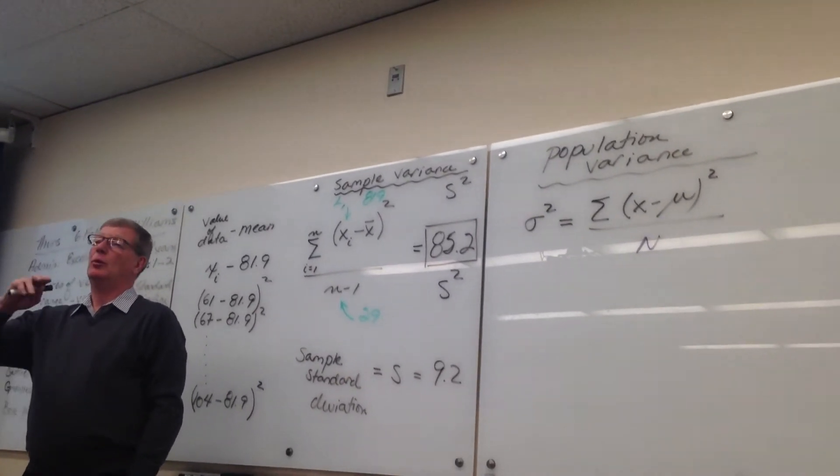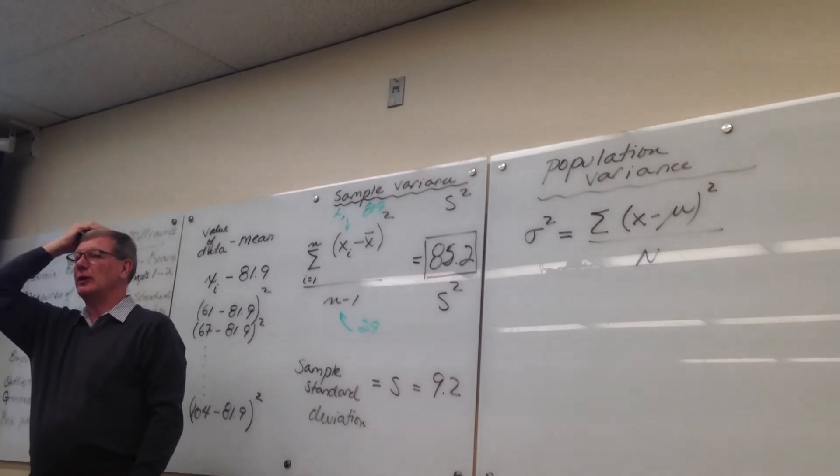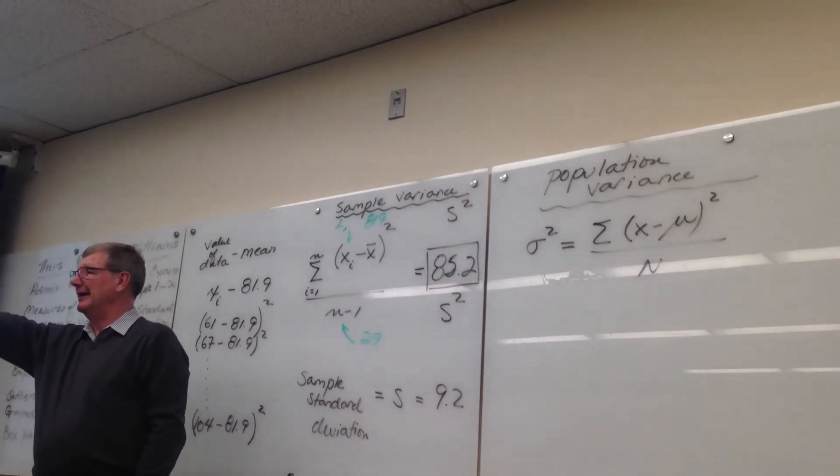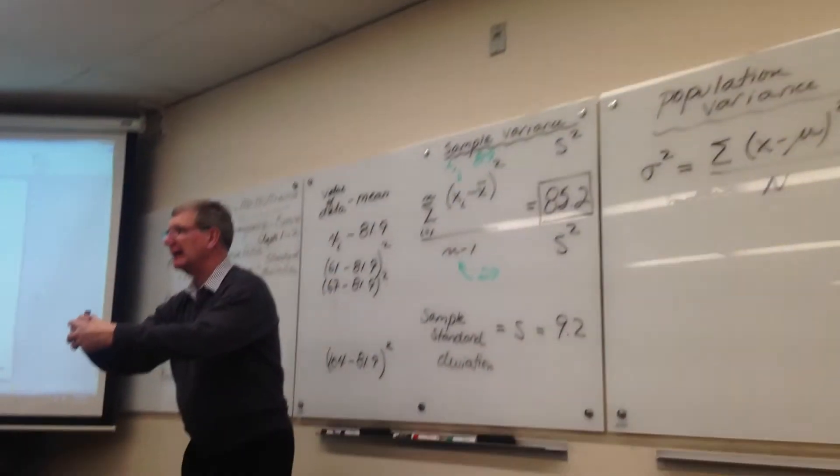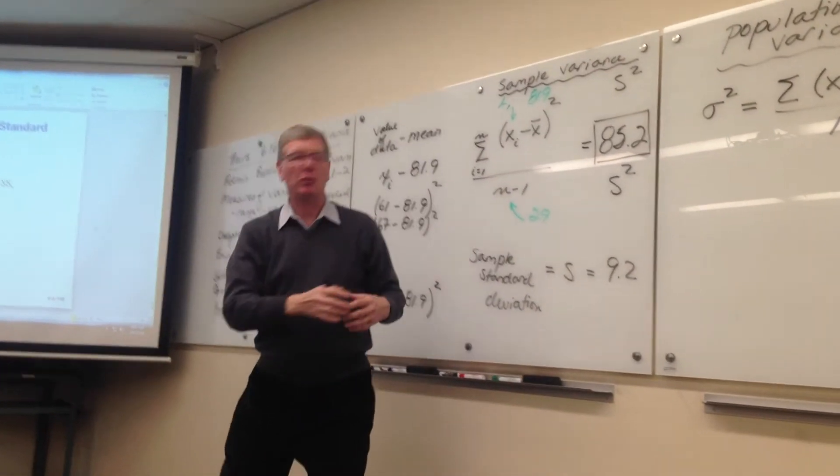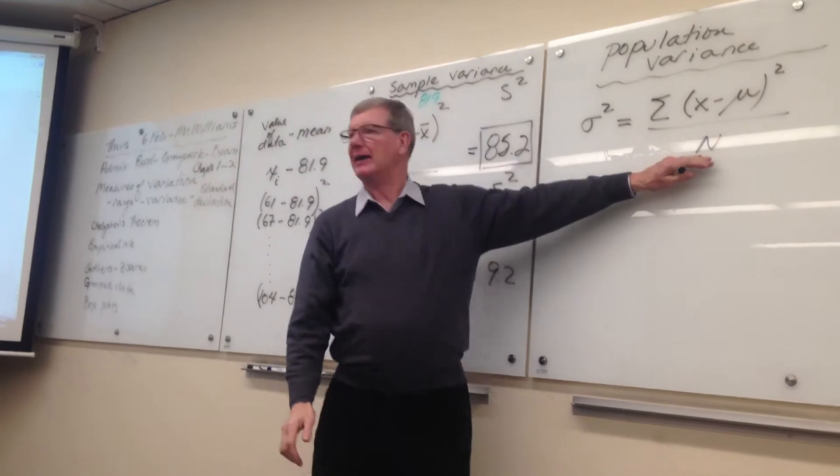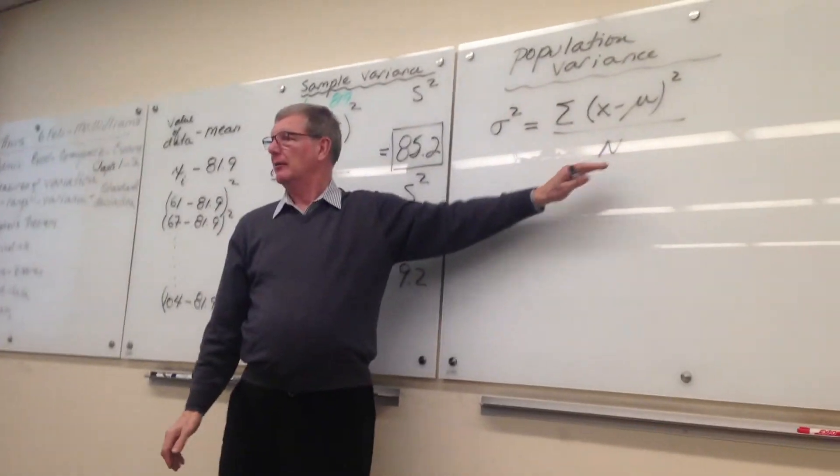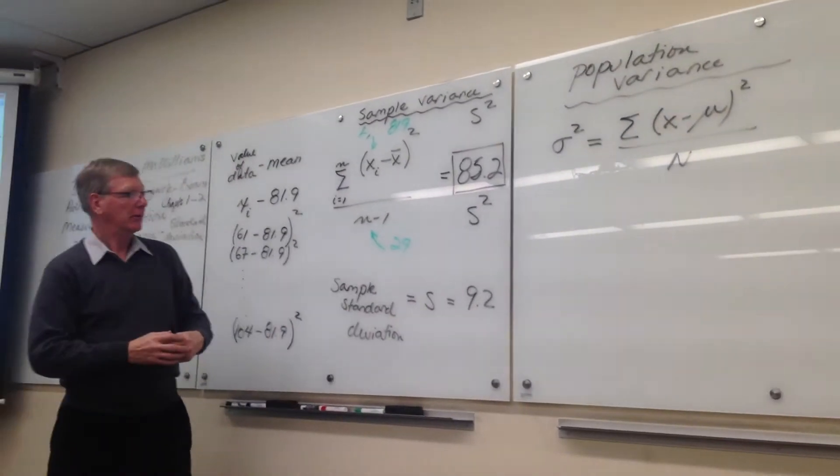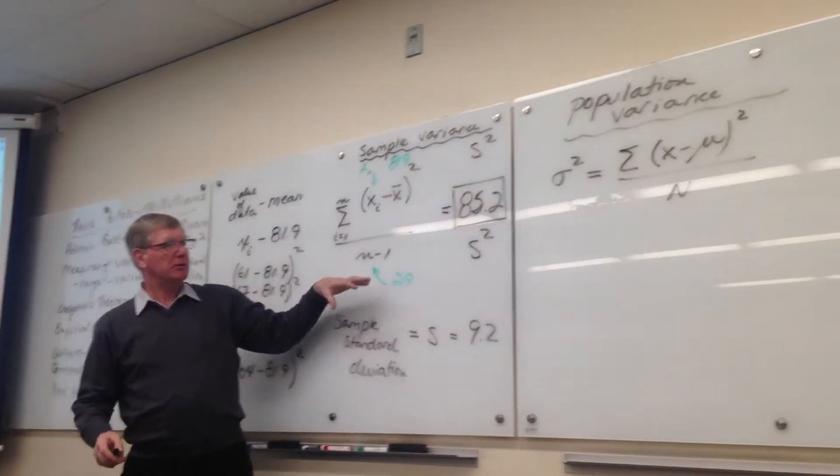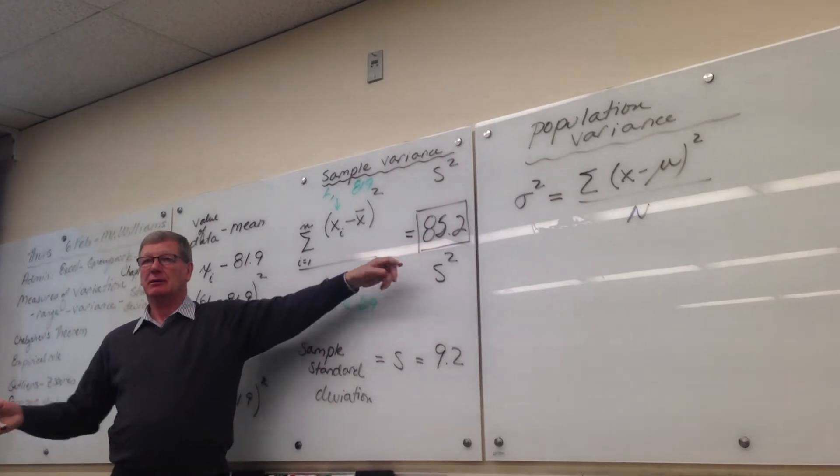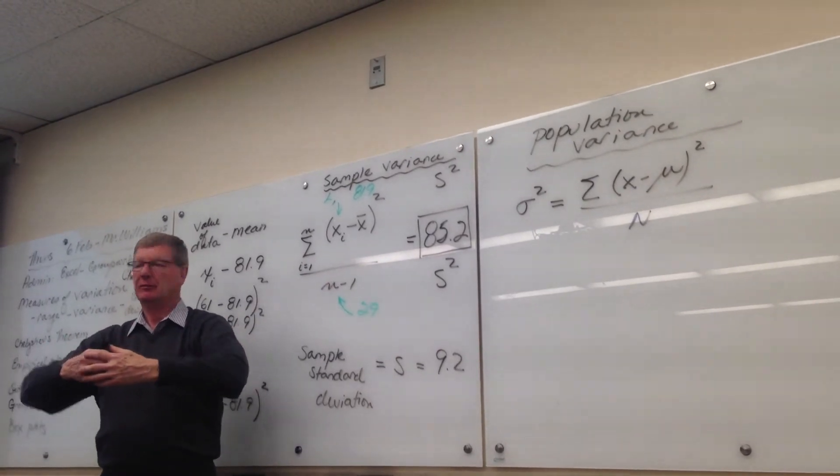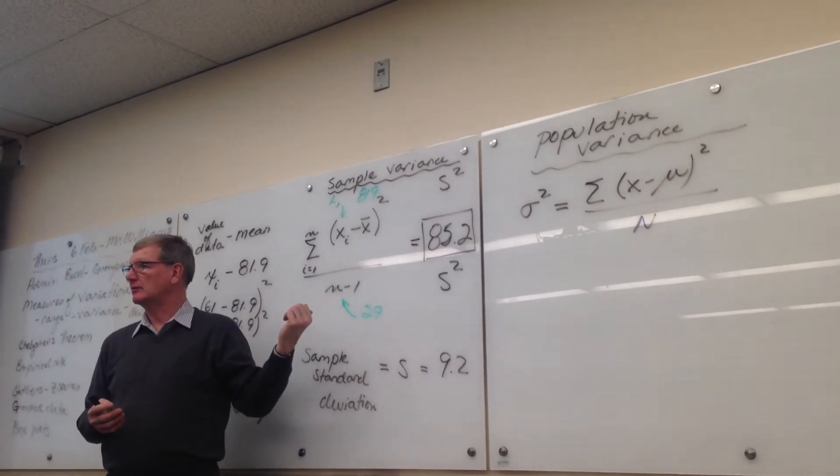Well, statisticians said, well, maybe we shouldn't be so enthusiastic. I only have 30 data points, right? If I knew all the data points, I wouldn't feel bad about dividing by them if I had the population. But I only have 30 data points. So I'm going to arbitrarily make this number a little bigger so that my guess is more conservative. And that's the reason that that's going on.